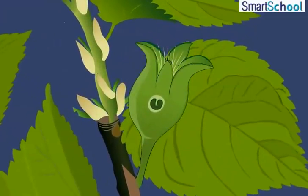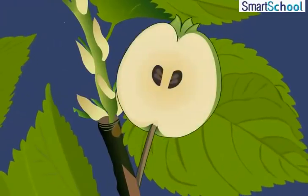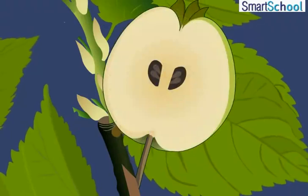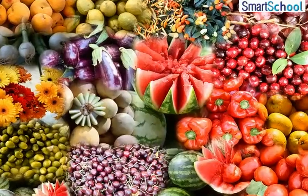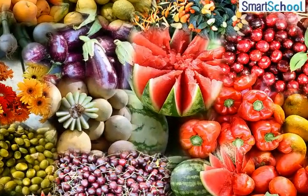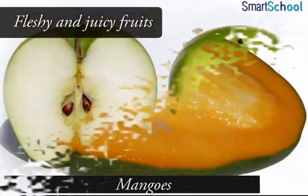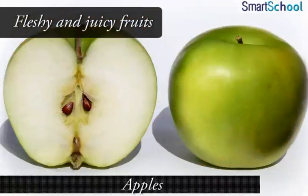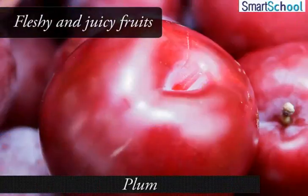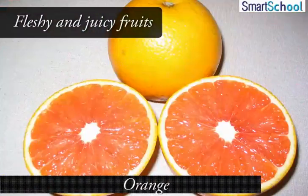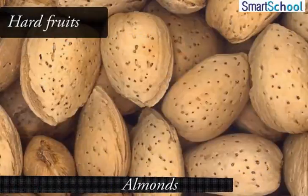It is important to note that some fruits are fleshy and juicy, such as mangoes, apples, peach, plum, and orange, whereas some fruits are hard, like almonds.